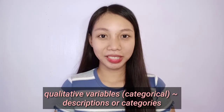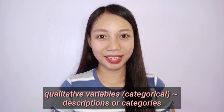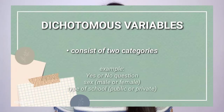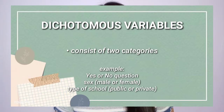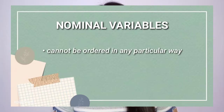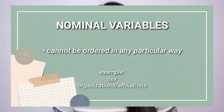Moving on to the next classification, we have qualitative variables. These type of variables are not expressed in numbers. Rather, they are descriptions or categories. Dichotomous variables consist of two categories, like yes or no questions, or sex — male or female, type of school — private or public, etc. Nominal variables represent categories that cannot be ordered in any particular way, such as sex — male or female, organizations or affiliations engaged in, etc.